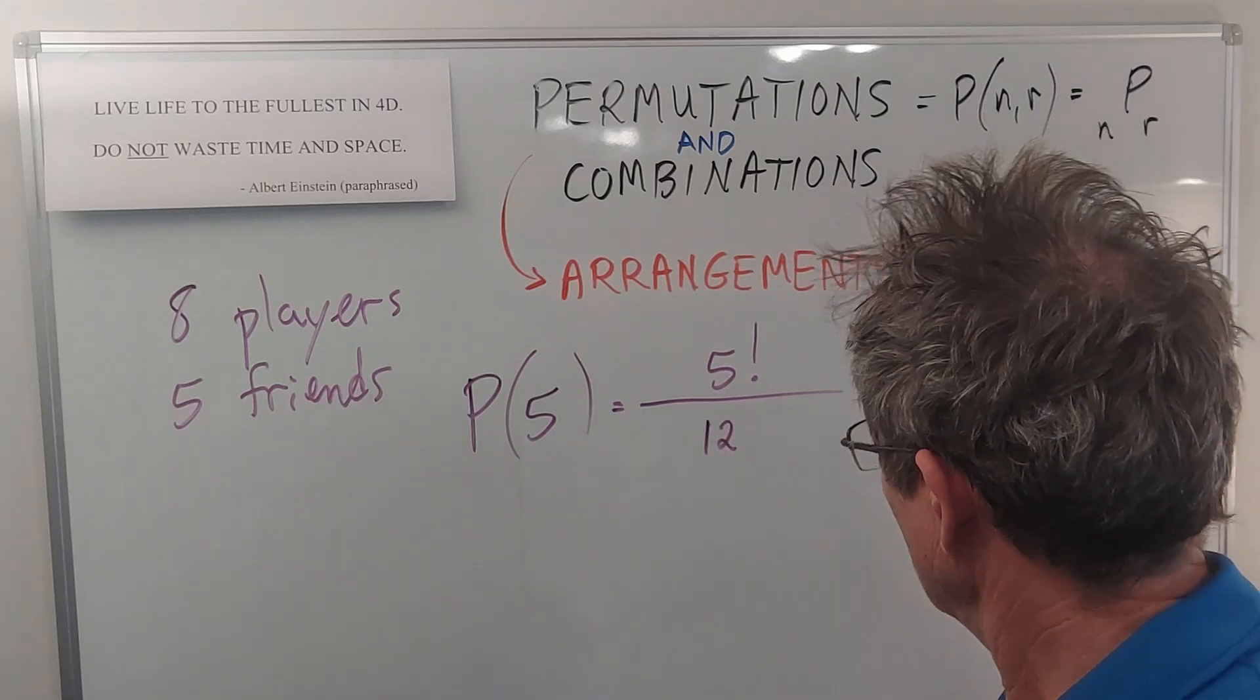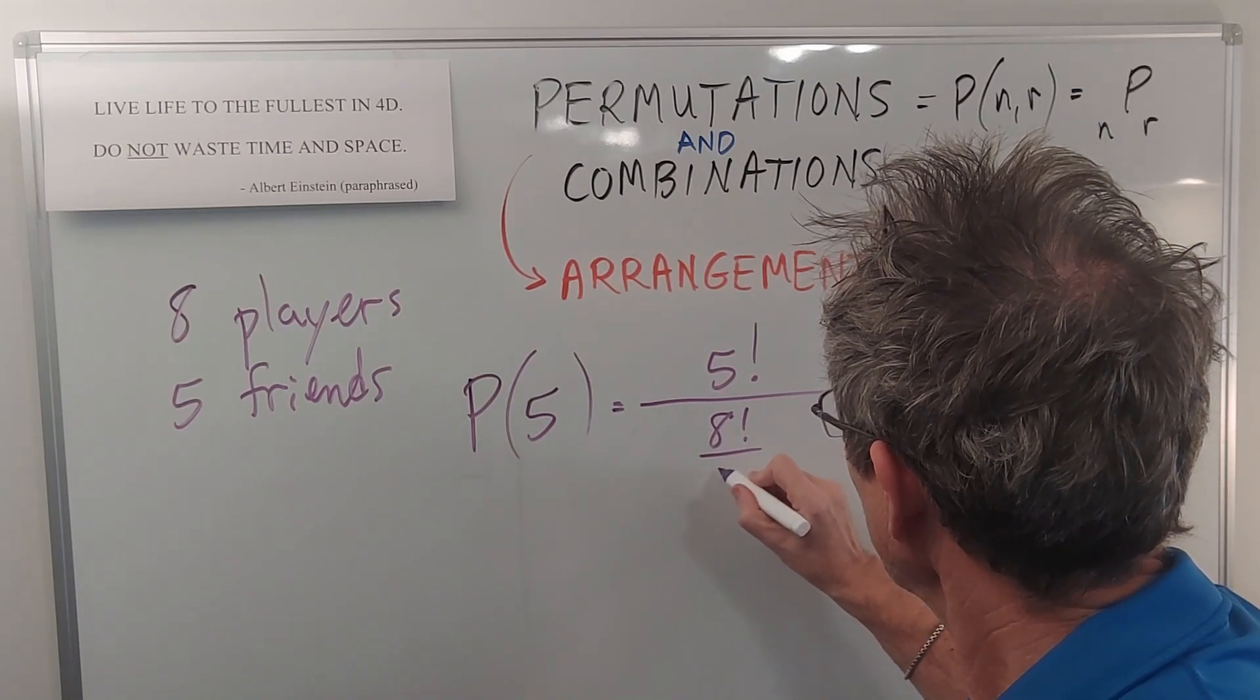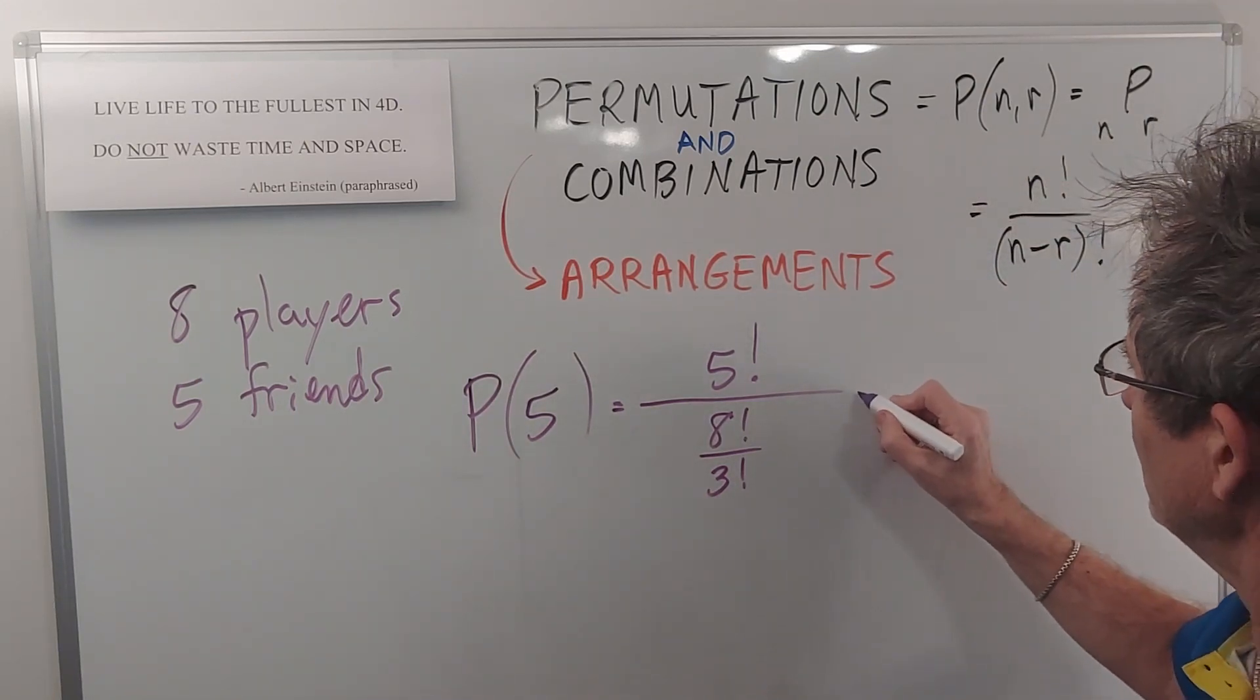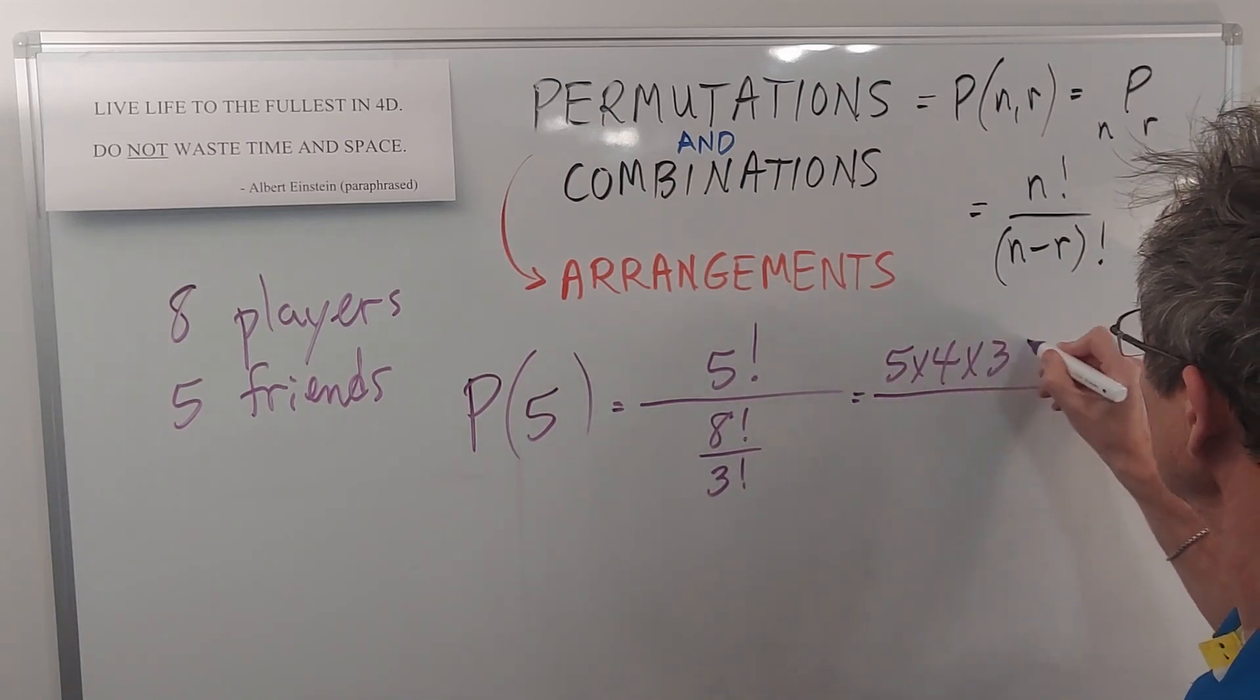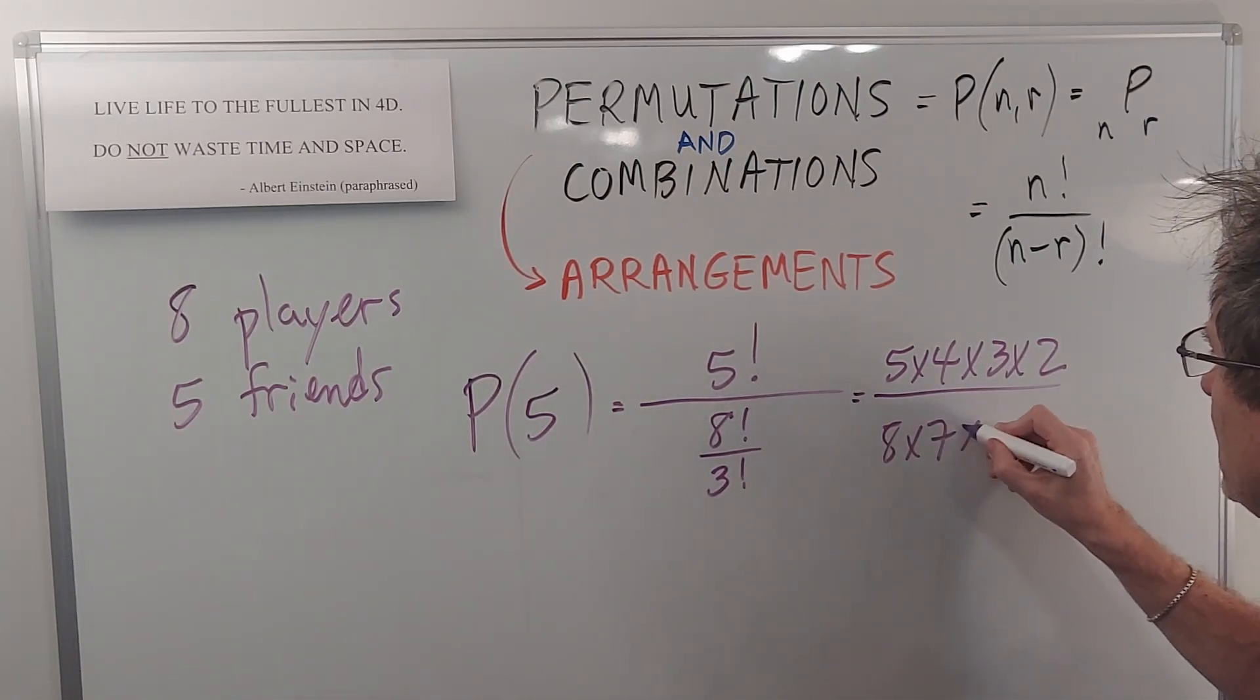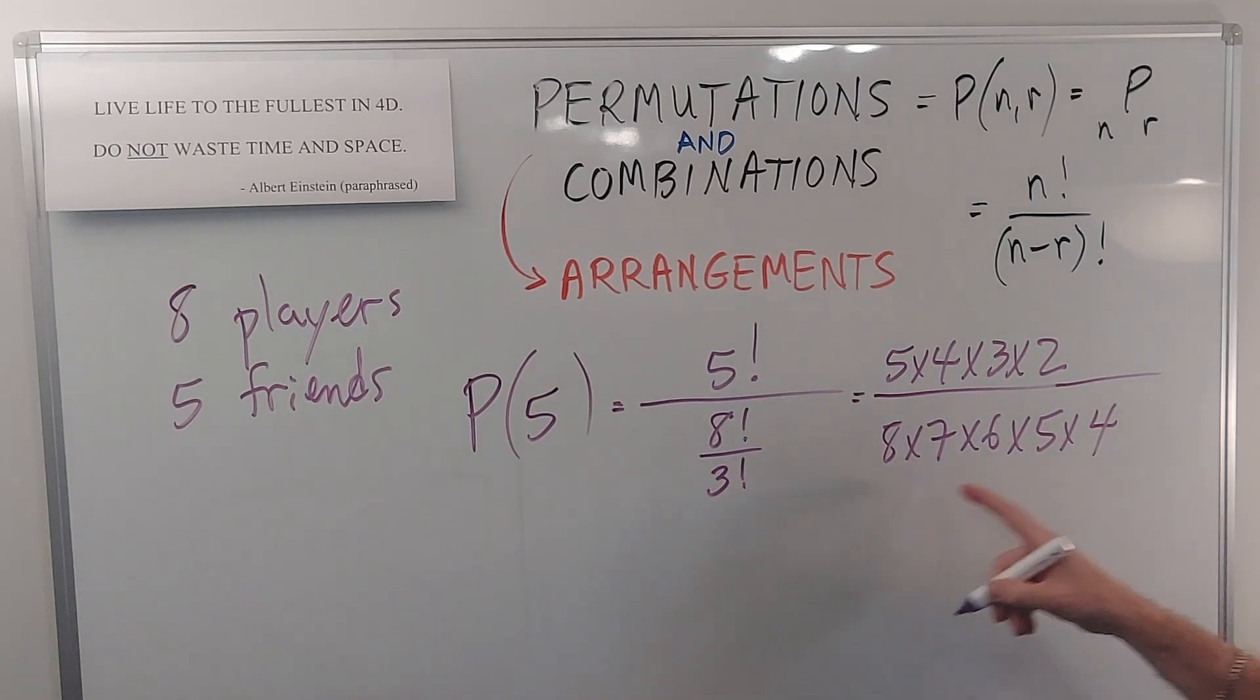Twelve... whoops, 8 factorial over 3 factorial, 8 over 8 minus 5. So that would be 5 times 4 times 3 times 2 over 8 times 7 times 6 times 5 times 4. And from there on, the 3 would cancel out.